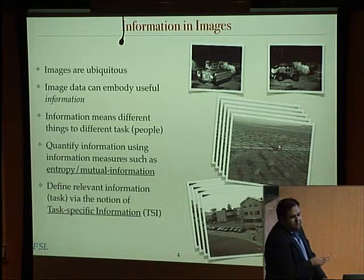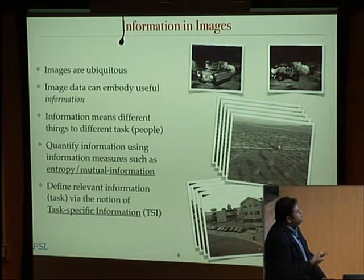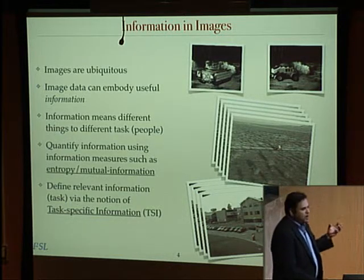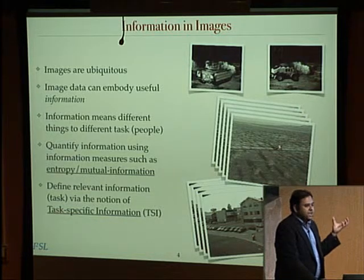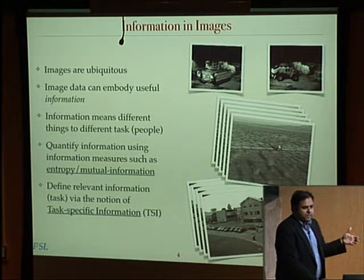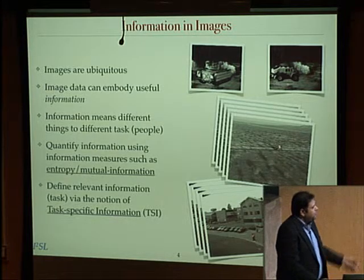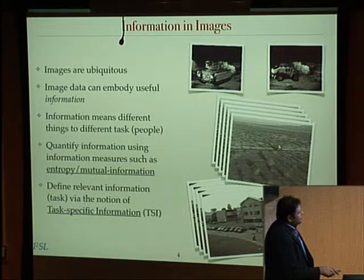I've been using the word information loosely. What we'll try to do, since we want to quantify this information and use it to design systems, is talk about how we can quantify it. One way is using the information-theoretic metric of entropy. Information theory deals with the idea of how you quantify how much information is represented in some data, and the very notion of information is based on statistical uncertainty. If everything is certain, there is no information in that data. This relates to probability density functions on random variables, which may represent physical measurements in an imaging setup, and from this we get the notion of task-relevant, task-specific information.